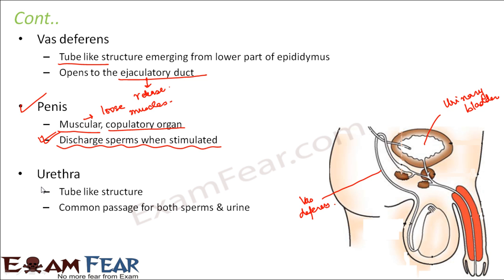The next part is urethra — a tube-like structure which is a common passage for both sperms and urine. Vas deferens is a passage for sperms, and the tube from the urinary bladder is a passage for urine. When these two passages combine they form the urethra, which carries both sperm and urine. It passes through the penis to open to the outside.